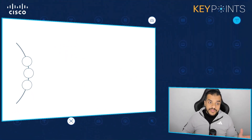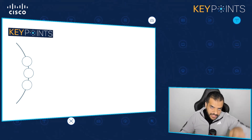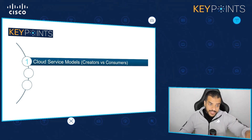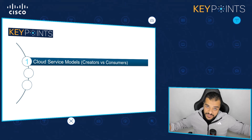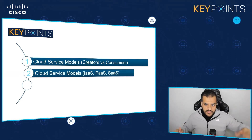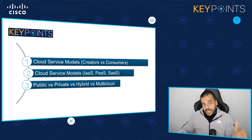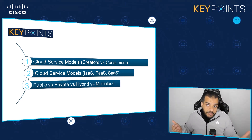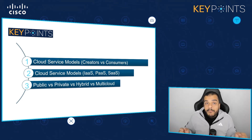For today's key points, we're comparing cloud deployment models versus cloud service models. Starting with cloud service models: are you the creator or the consumer? The most common service models are infrastructure as a service, platform as a service, and software as a service. When it comes to cloud deployment, we have public, private, hybrid — which is a mix of both — and multi-cloud, which is more than one public cloud provider offering you cloud services.